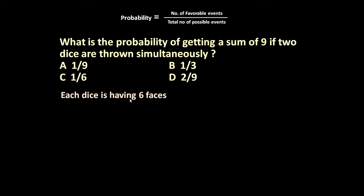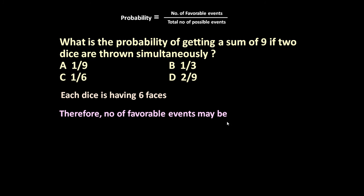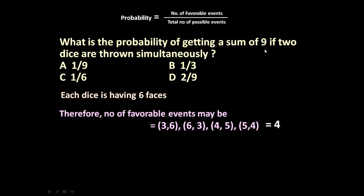Each dice has six faces — numbers one to six are on every dice. We want a sum of nine, so we identify the favorable events. With two dice, the combinations that give a sum of nine are: 3+6, 6+3, 4+5, and 5+4. So these four are the possible ways to get a sum of nine.